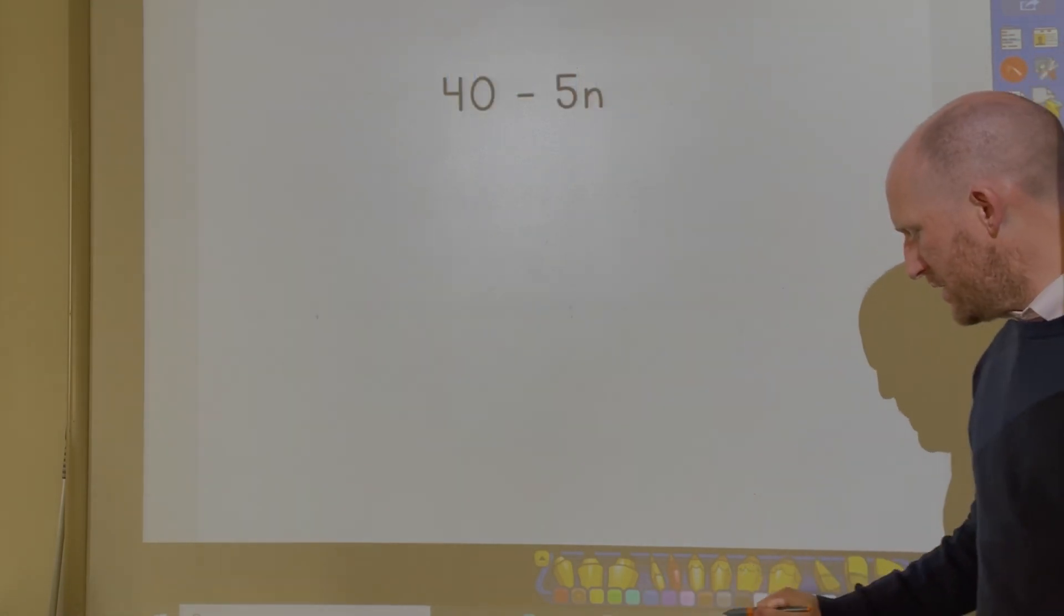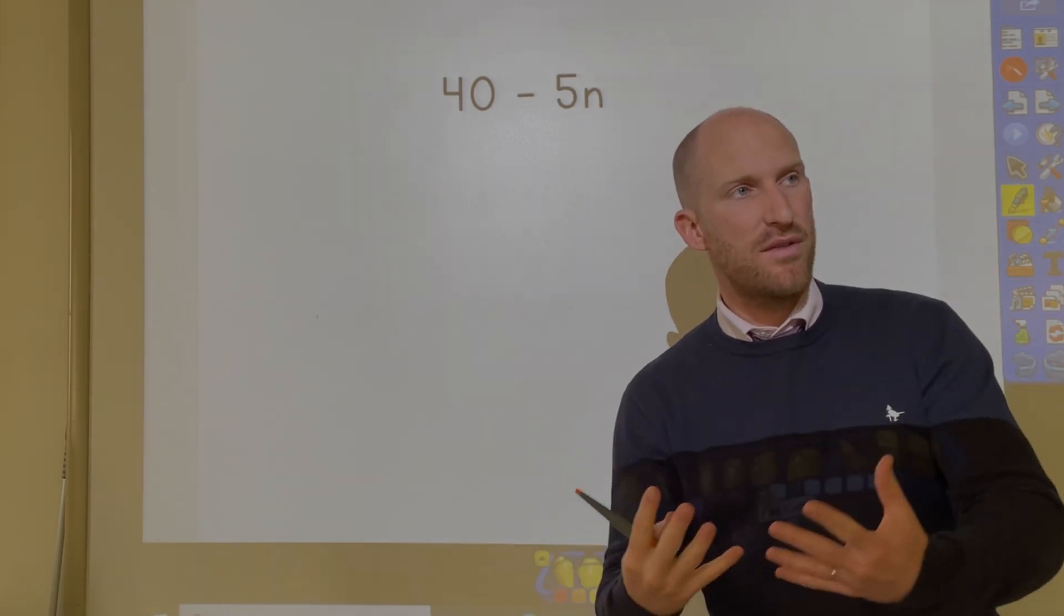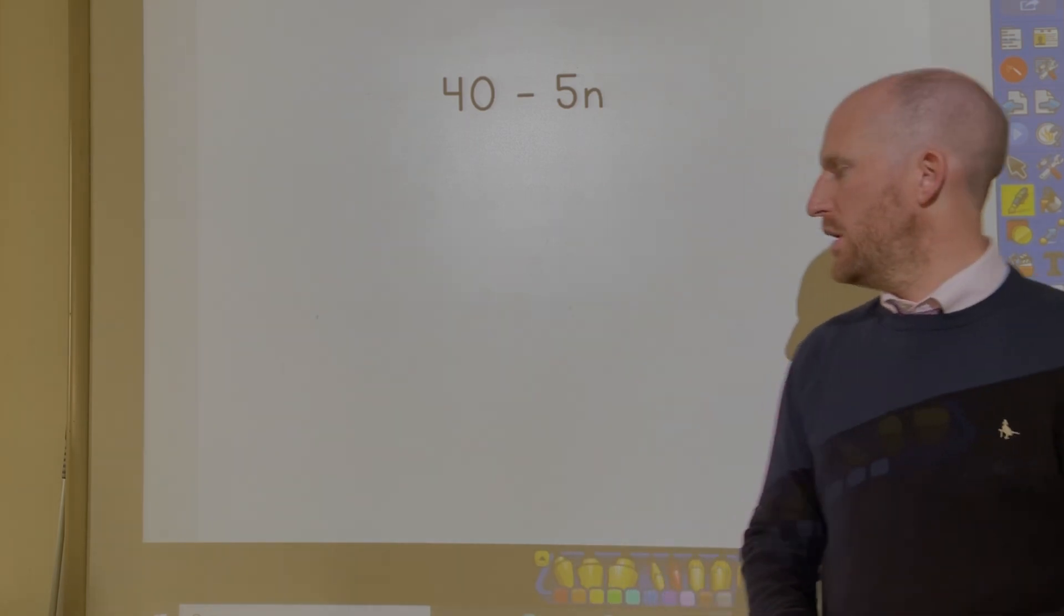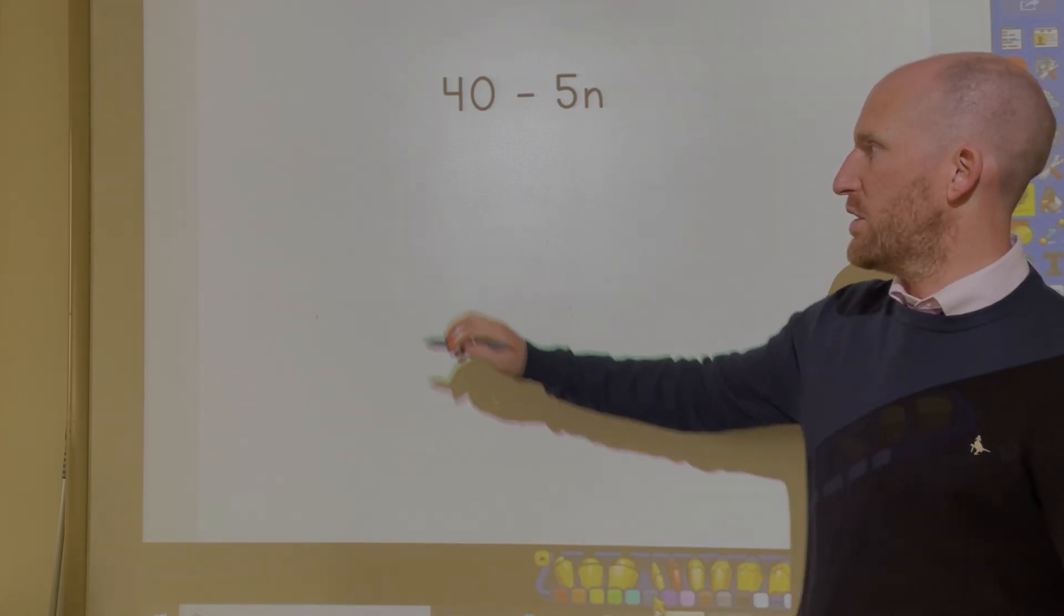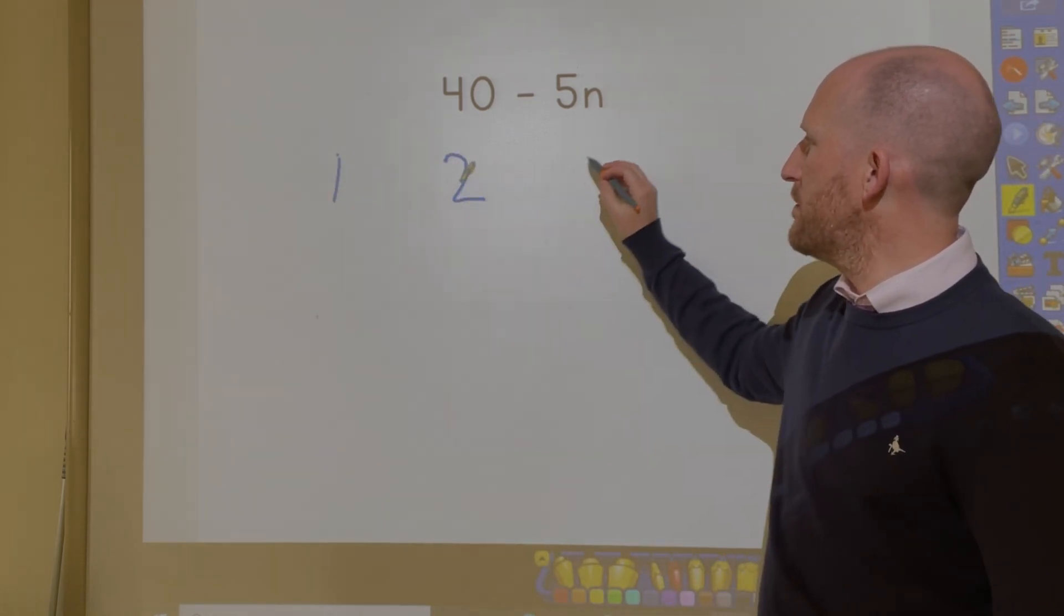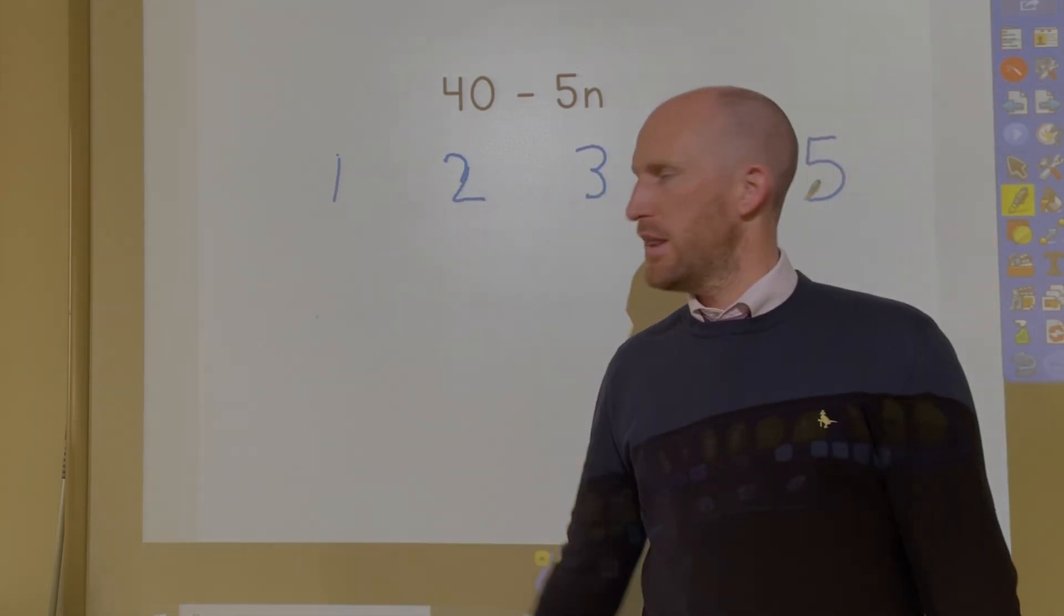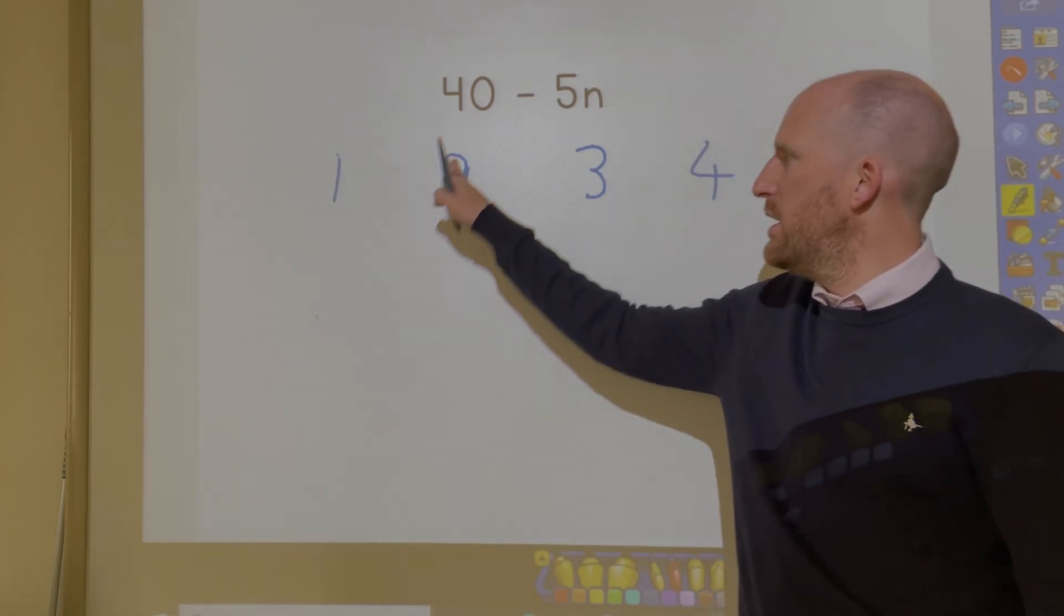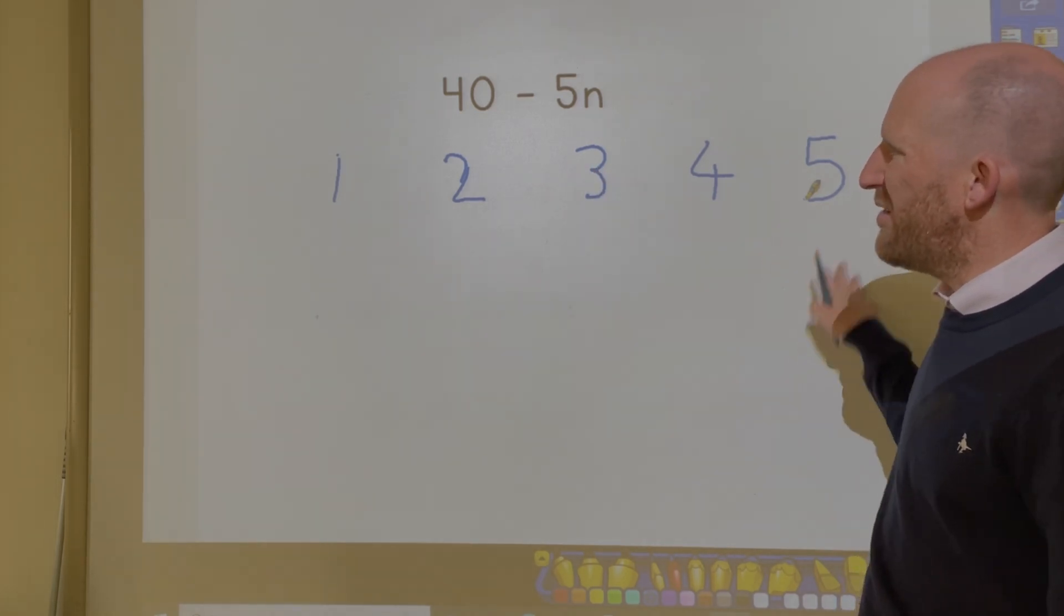Now the final thing you may be asked to do is basically you will be given the formula and you have to then generate the number sequence yourself. And this is actually much easier than trying to find the nth term for yourself, because all you do is write 1, 2, 3, 4, 5. So these are the blue numbers that tell me what number in the sequence they are. This is the first number, this is going to be the second, this is going to be the third number, fourth number, and the fifth number in the sequence.